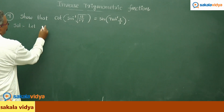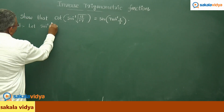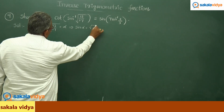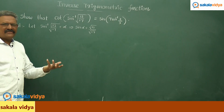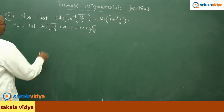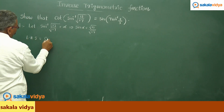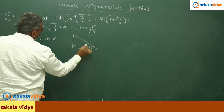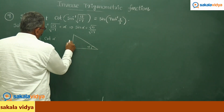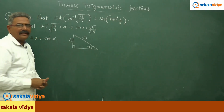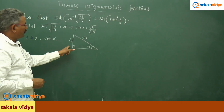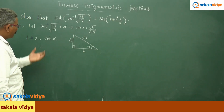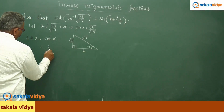Let sin⁻¹(√13/17) = α, so sin α = √13/17, which is √13 by √17. Now consider the left hand side, that is cot α. Drawing the triangle with angle α: by the definition of sine, the opposite side is √13 and the hypotenuse is √17. So the adjacent side is √(17−13) = √4 = 2. Therefore cot α = adjacent/opposite = 2/√13. This is the LHS.